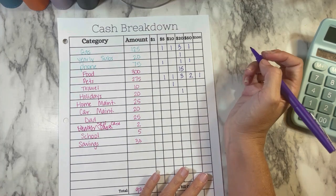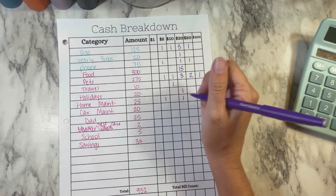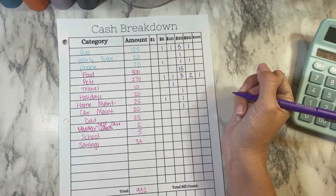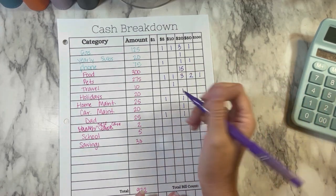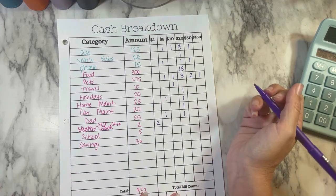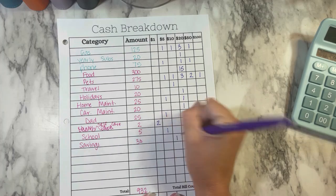Holidays, we're going to do a $20. Home maintenance is getting a $20 and a $5. Car maintenance is a $20. My dad, we're going to do a $20 and a $5. Self-care is getting $2. School is getting a $5, and then savings is getting $30, so we're doing a $20 and a $10.